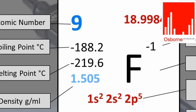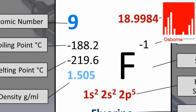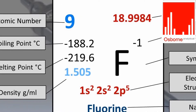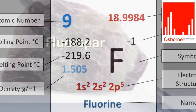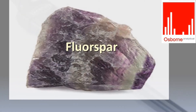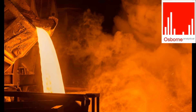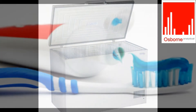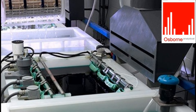Fluorine is the lightest halogen and the thirteenth most abundant element in the Earth's crust, even more abundant than chlorine. It naturally occurs as mineral fluorides, is used in steelmaking, plastics, cooling agents, dental treatment, and in the metal plating industry.